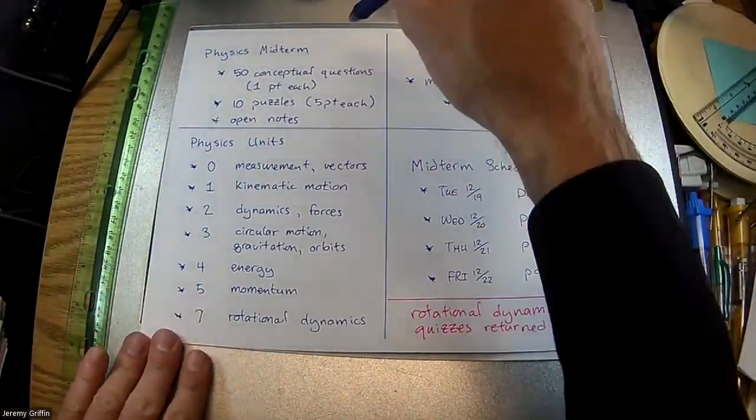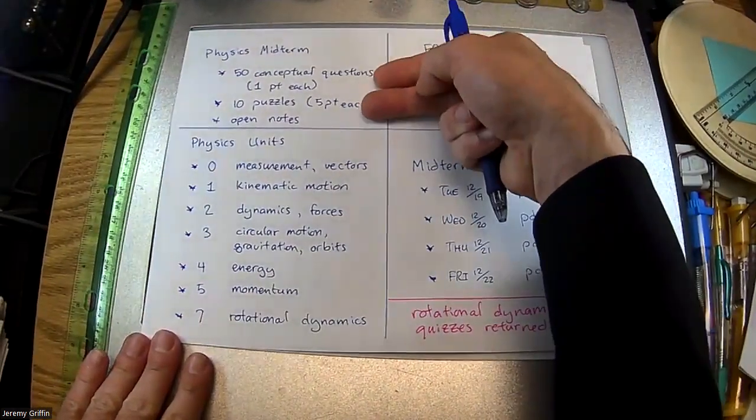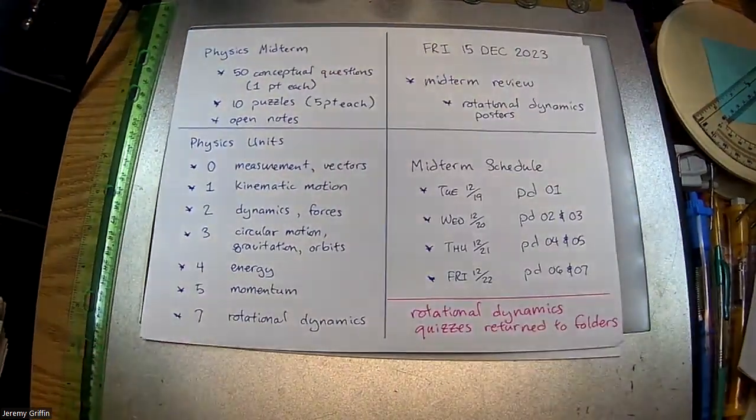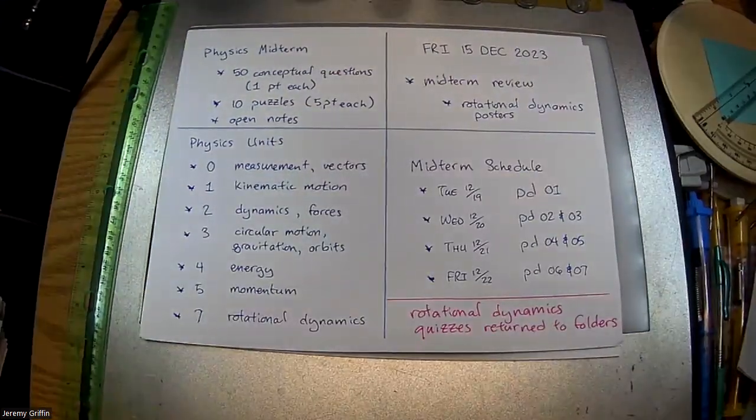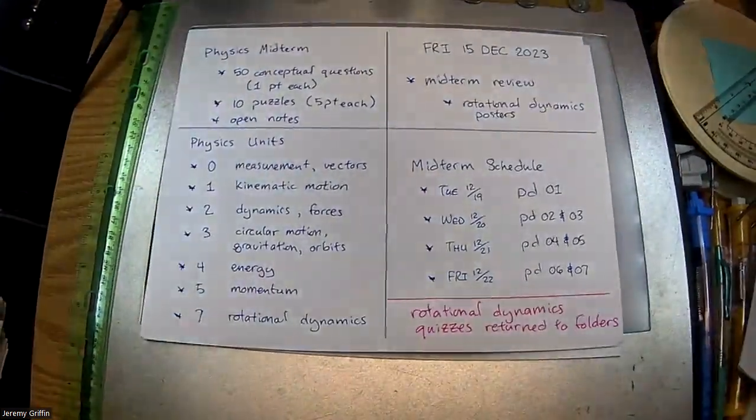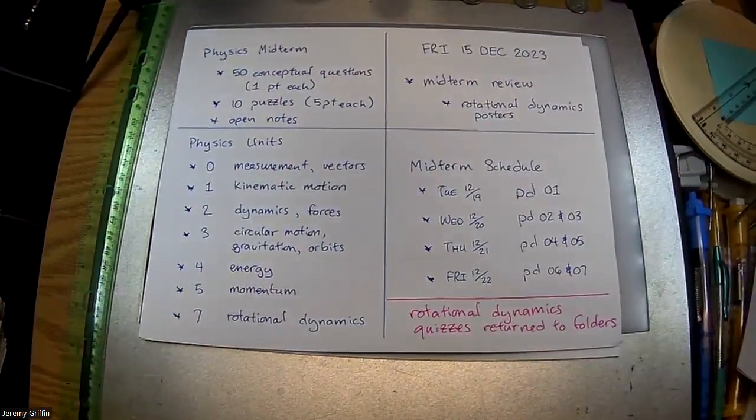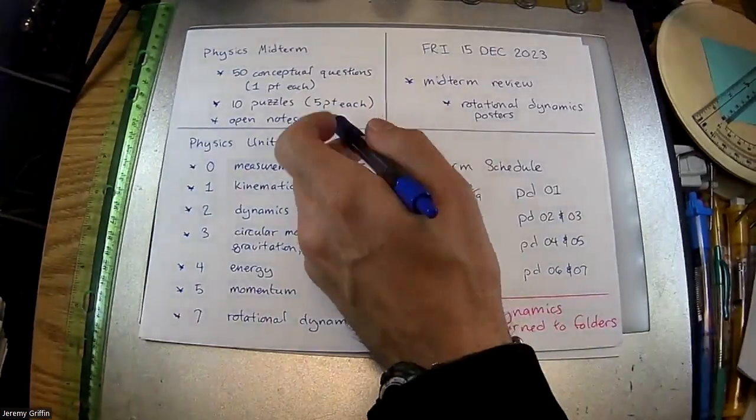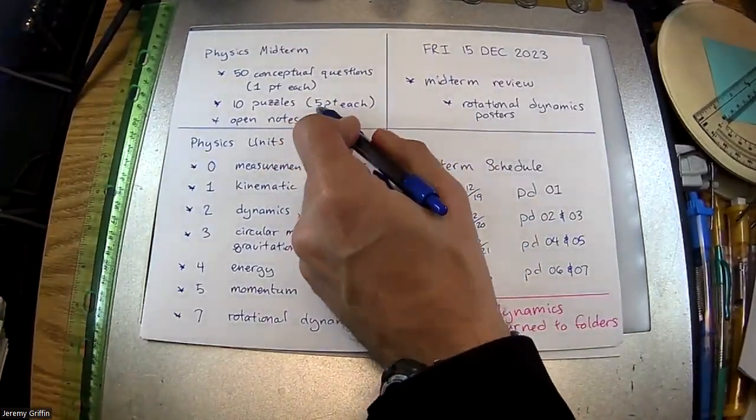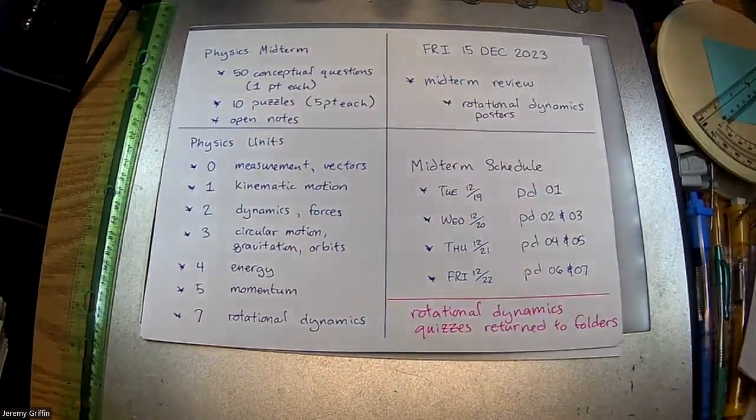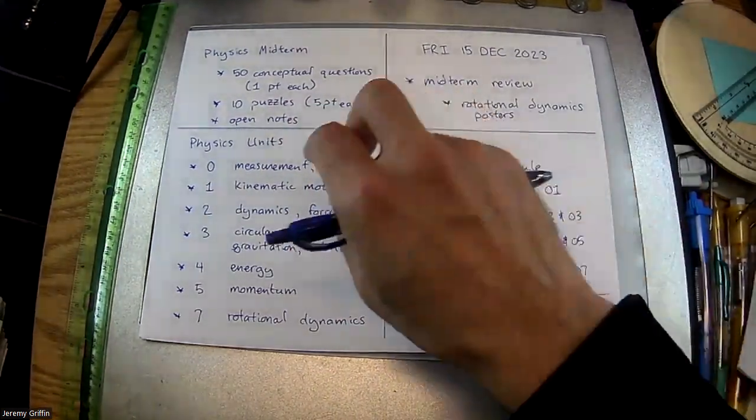You guys remember for this class, the midterm is going to be two halves. The first half is 50 conceptual questions. One point each comes straight off this bank of 116. The second half is going to be 10 physics puzzles that look a lot like one of your quizzes. So five points apiece there. And one or two questions per unit.